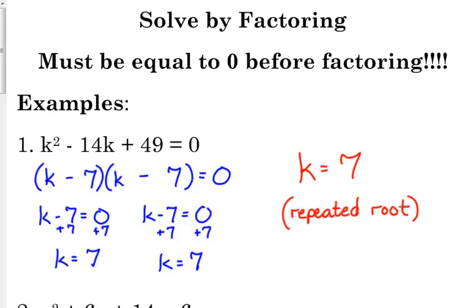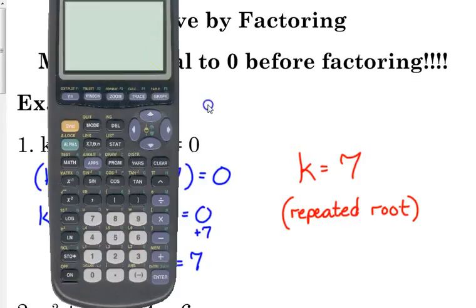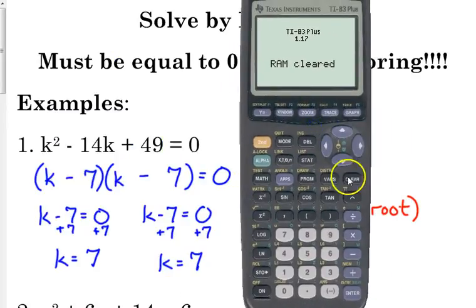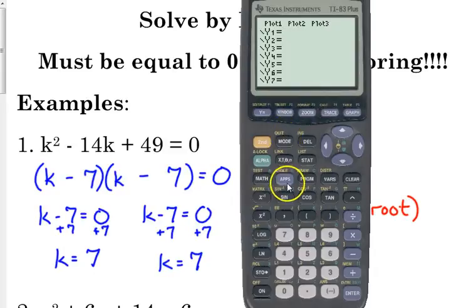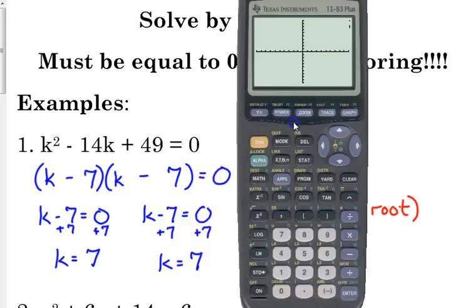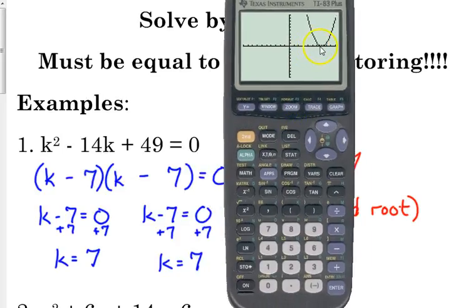And I'm just going to put in parentheses here that it is repeated. It's a repeated root. Okay? Because usually, we're looking for two answers. It's a quadratic equation. It's squared. So we should have two solutions, but we only get one, and that's because it's a repeated root. Now, I'm showing you how to do these without a calculator, so you can always check yourself by graphing it and making sure that your equation either crosses or touches. In this case, it would touch the x-axis at that number.